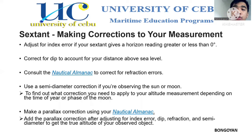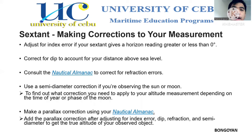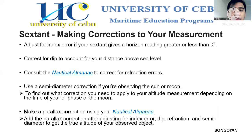Use a semi-diameter correction if you're observing the sun or moon to find out what corrections you need to apply to your altitude measurement depending on the time of year or phase of the moon. Make a parallax correction using your nautical almanac and add the parallax correction after adjusting for index error, dip, refraction, and semi-diameter to get the true altitude of your observed object.